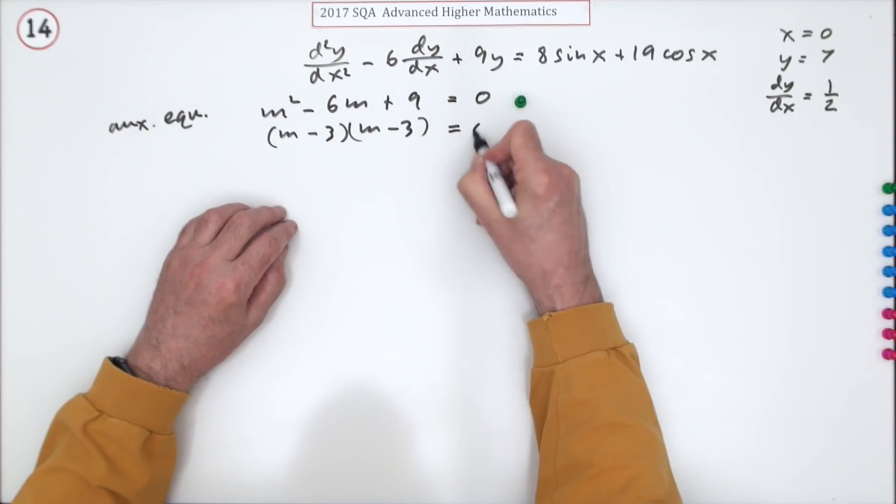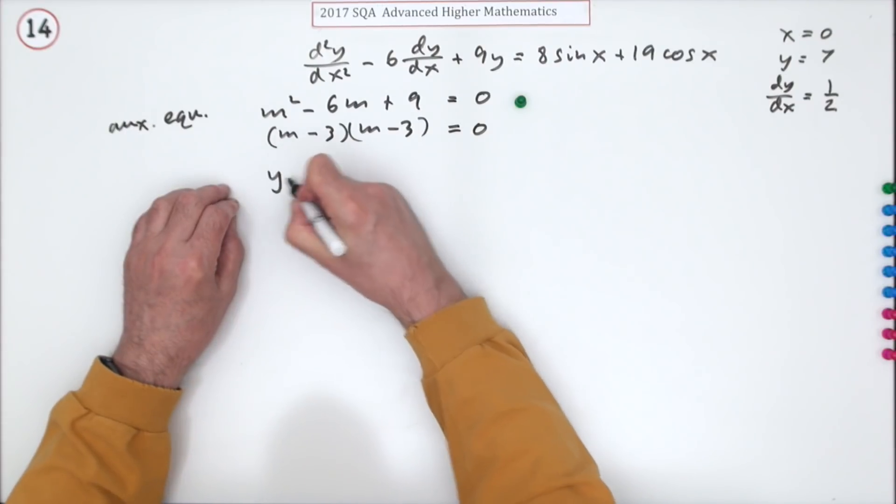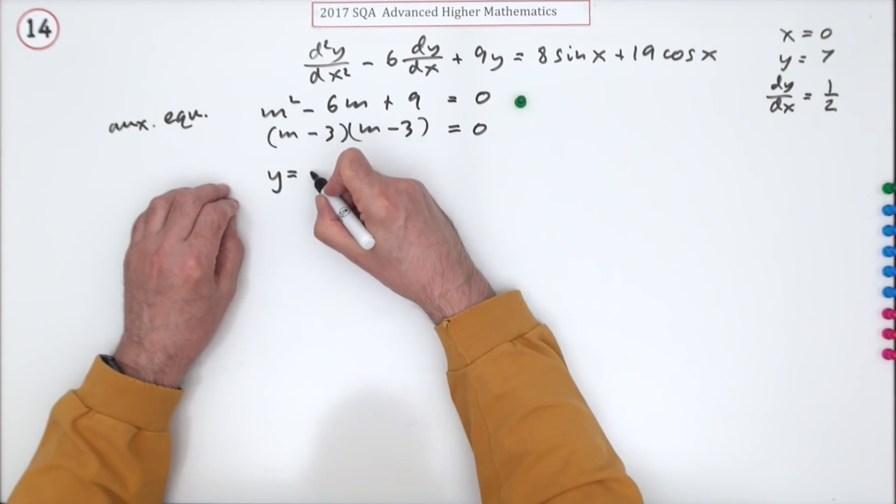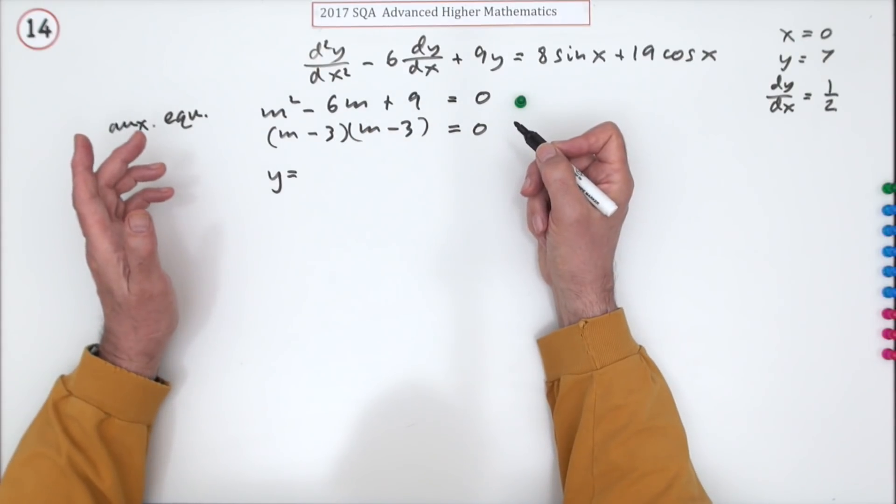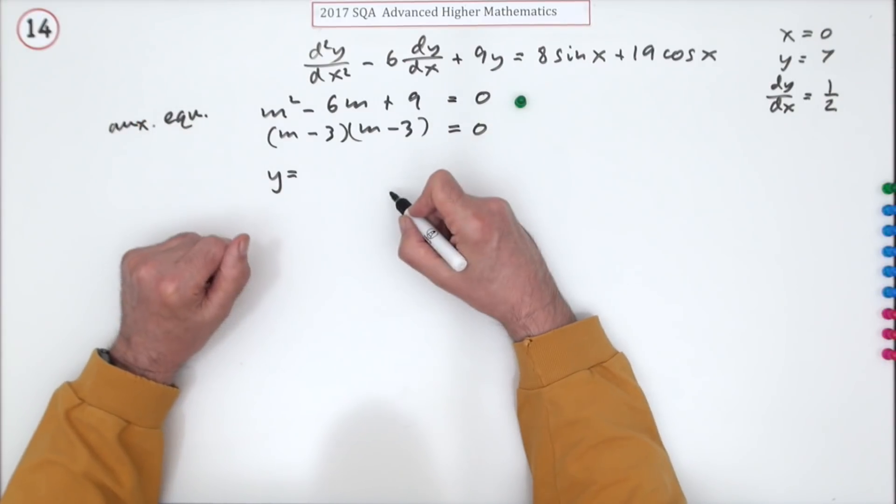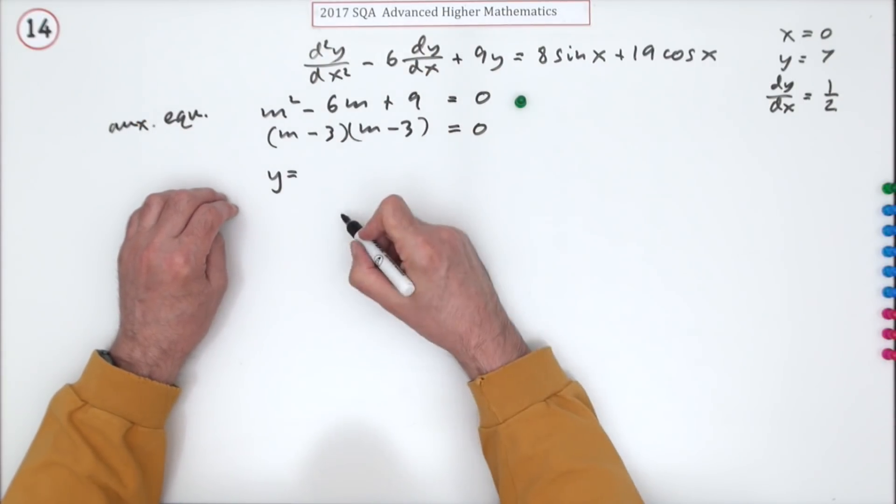That factorises to (m minus 3)(m minus 3), so you've got two repeated roots. That means the solution will have to be in the form - you can't have Ae^(3x) plus Be^(3x) because that would just be one lot, and there has to be two solutions because there's two integrations if you're starting with a second order.